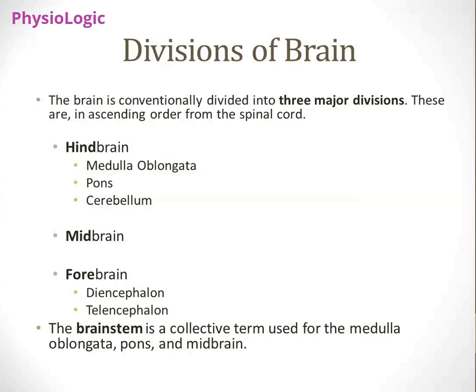The forebrain is again divided into two main components: diencephalon and telencephalon. We are going to look at these in the next slides. There is a term used in neuroanatomy — brainstem. The pons, medulla oblongata, and midbrain are collectively known as the brainstem. So what is the difference between hindbrain and brainstem? The hindbrain is the collective term for medulla oblongata, pons, and cerebellum. The brainstem is the collective term for medulla oblongata, pons, and midbrain.